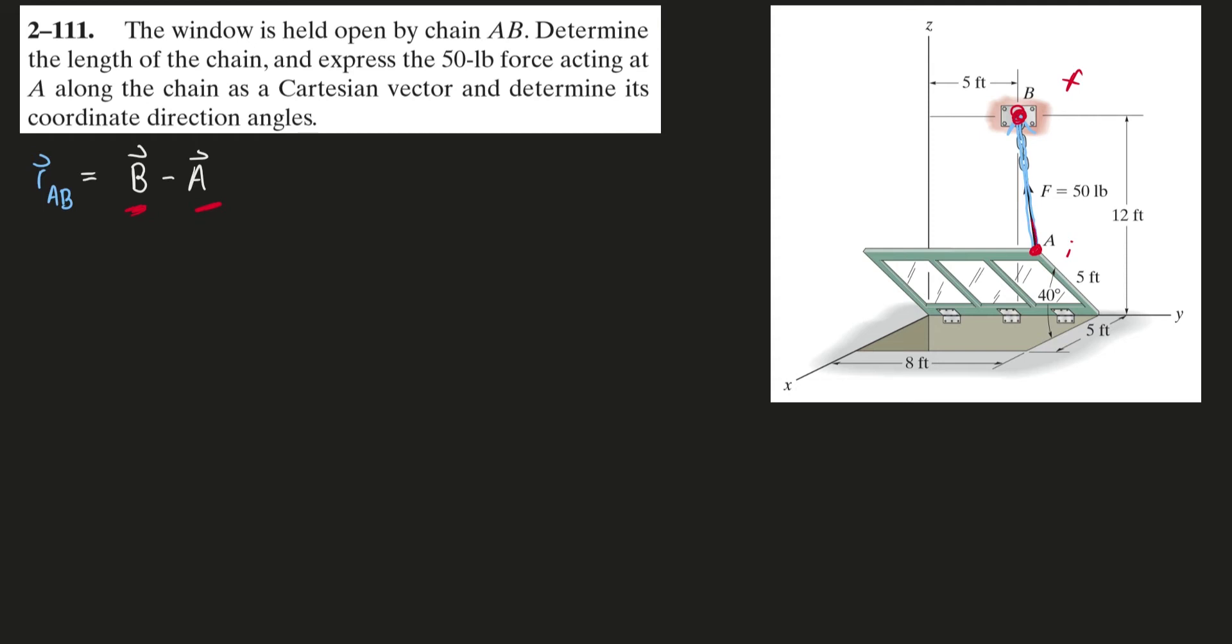Our force vector is going from A to B, it's directed towards B. So B is our final, A is our initial. Just make sure you don't flip it. We can find the coordinates of B, no problem. B is on the yz plane, so that's going to be zero in the x. We have this 5 feet in the y direction and we have 12 feet in the z direction, so plus 12 k hat.